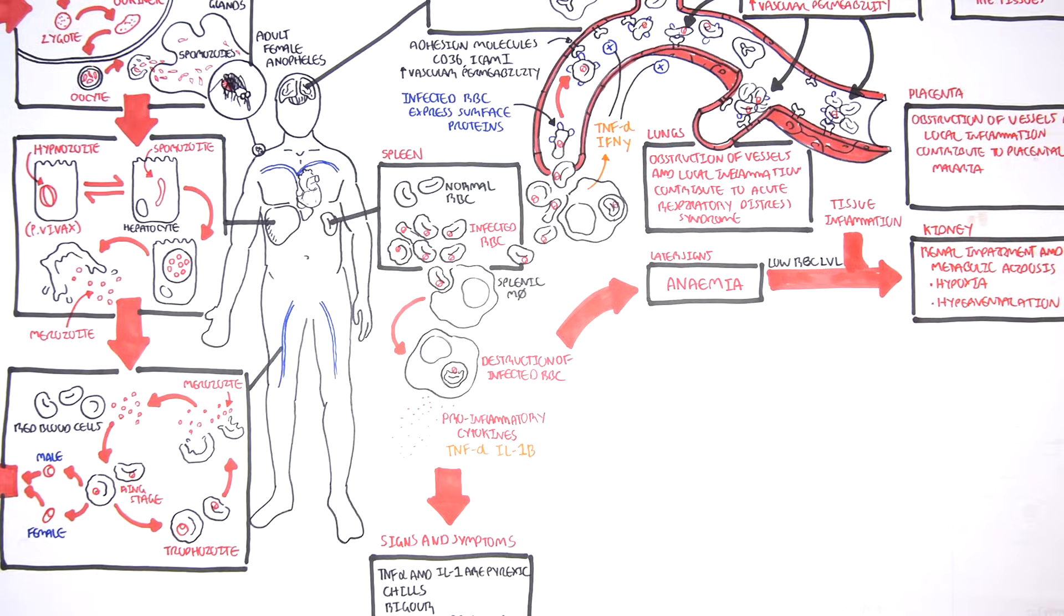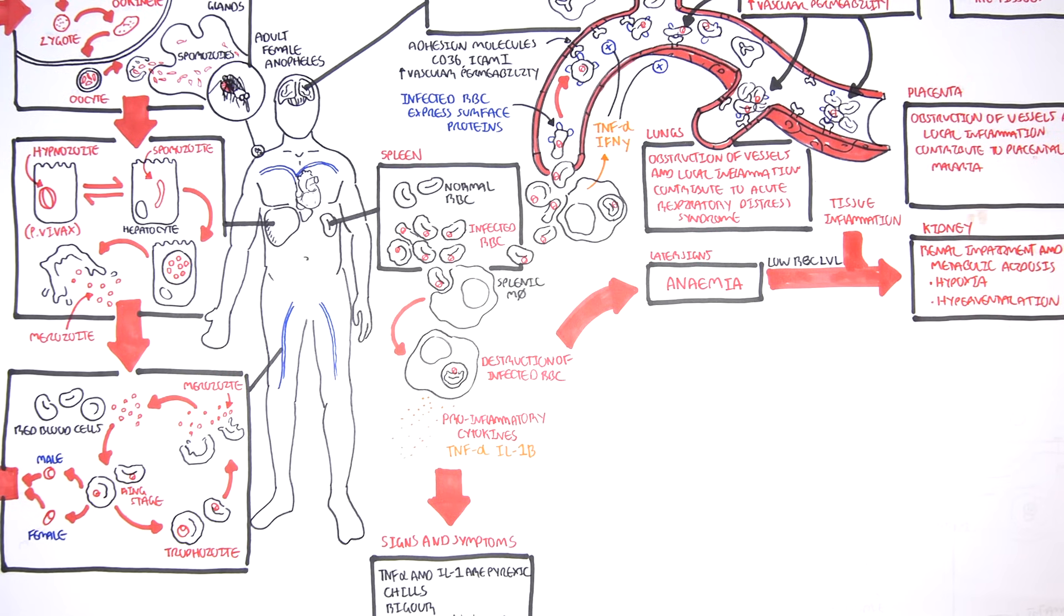Okay, so that was somewhat a detailed overview of what occurs in malaria. We had a release of pro-inflammatory cytokines. We had adherence of plasmodium-infected red blood cells. As well as we had the rupture and removal of parasites and altered red blood cells by splenic macrophages. Let us now look into more detail how the pro-inflammatory cytokines actually get released.